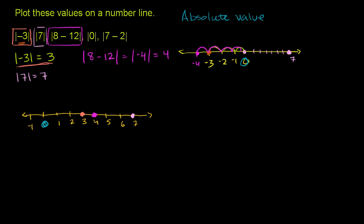Then we have the absolute value of 0. How far is 0 from 0? It's 0 away from 0. The absolute value of 0 is 0, so you just plot it right over there at 0.